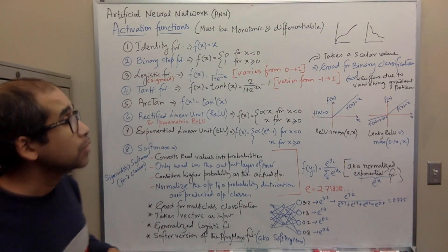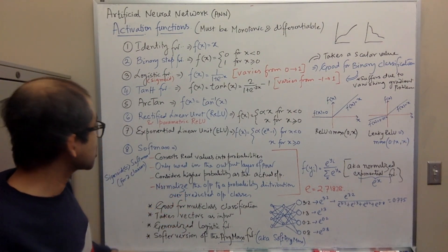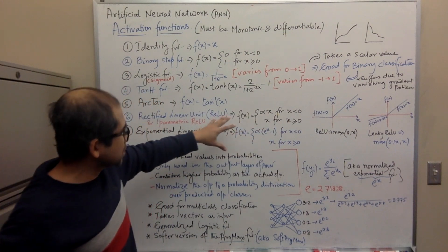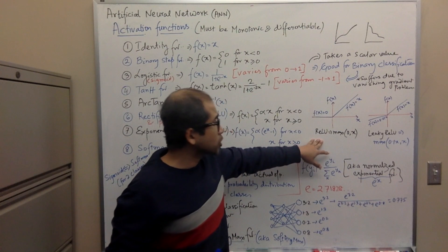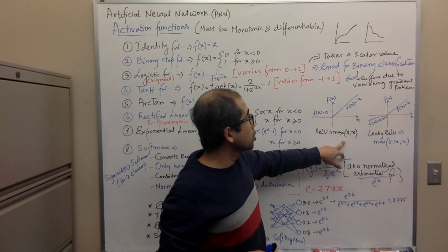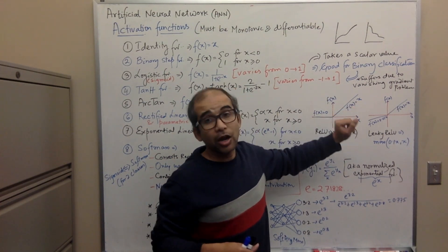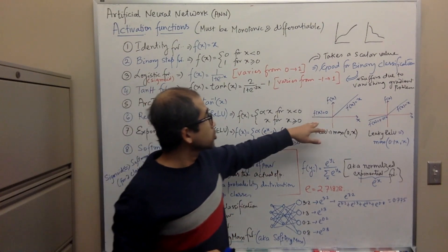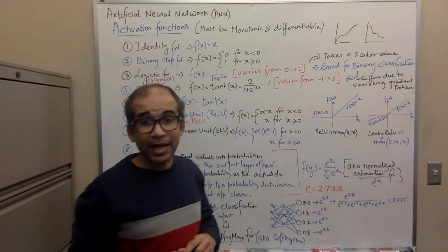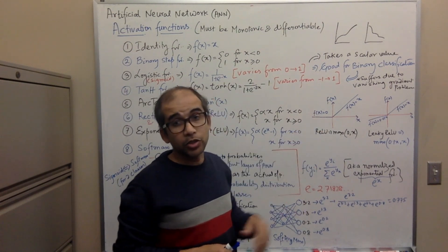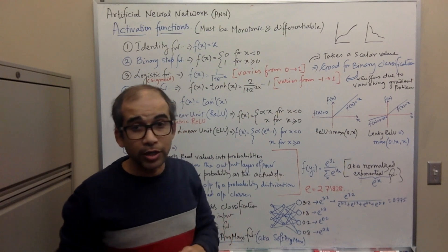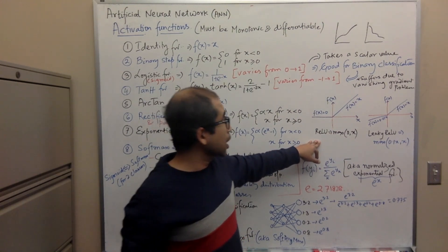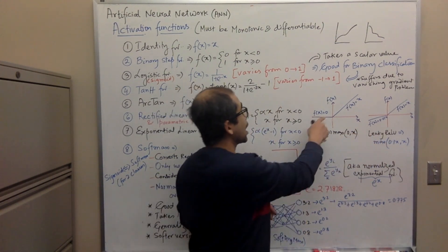The Rectified Linear Unit, or ReLU, is a very important and widely used activation function. The ReLU function is defined as f(x) = max(0, x): if x is positive, f(x) equals x; if x is negative, f(x) equals zero. This means all negative input values are immediately turned to zero, which is not ideal — you lose many input values.